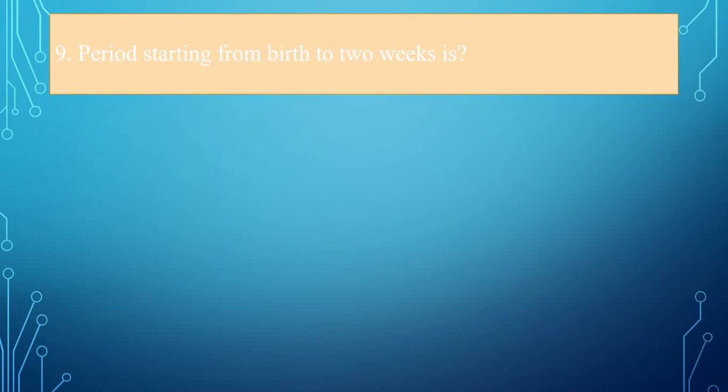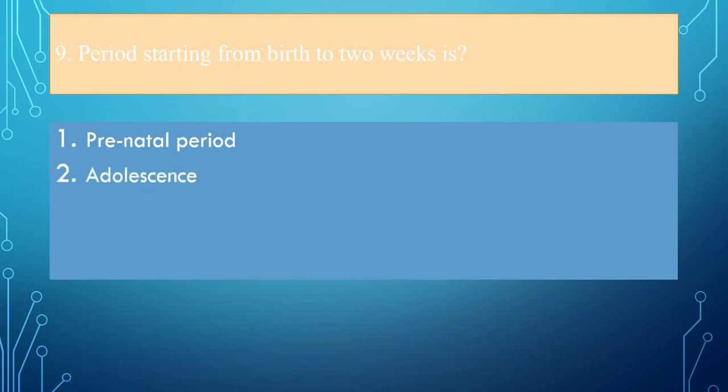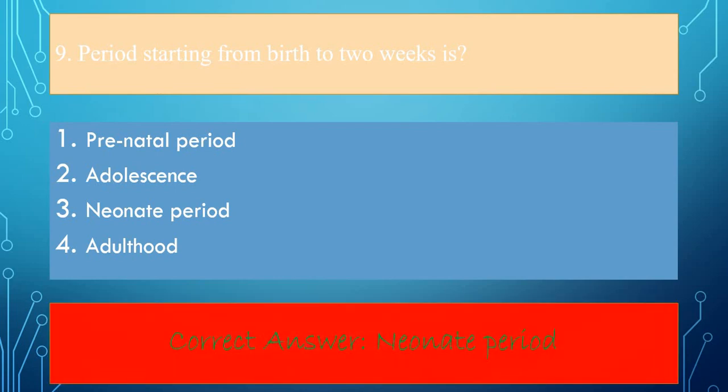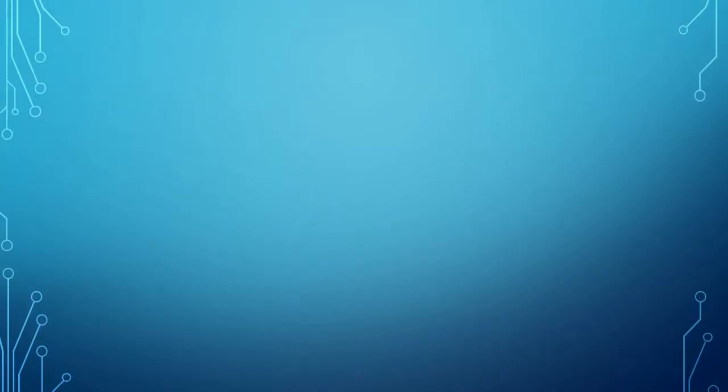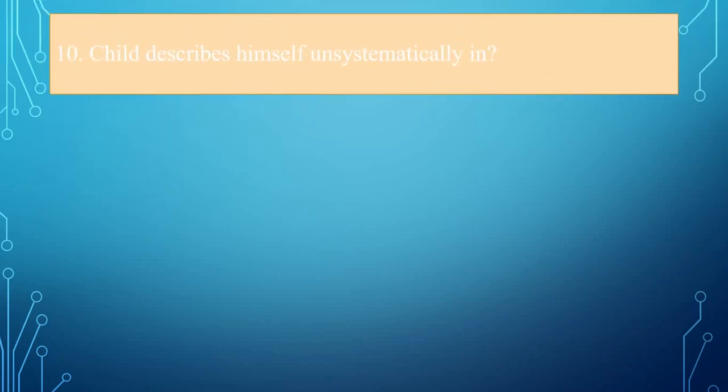Now the second last question: Period starting from birth to two weeks is prenatal period, adolescence, neonate period, or adulthood? The correct answer is neonate period.